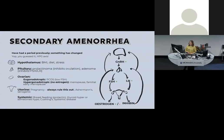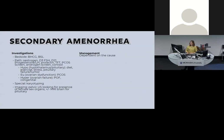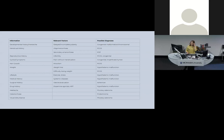Secondary amenorrhea also follows the HPG axis. Hypothalamus: BMI, stress, diet. Pituitary: prolactinoma and adenoma. Ovarian: check hormones to determine if eugonadotropic or hypergonadotropic. For uterine causes in secondary amenorrhea, rule out pregnancy, Asherman's syndrome, and iatrogenic causes — some contraception can cause a delay in periods returning. Systemically: breastfeeding, thyroid (usually hyper but occasionally hypo), Cushing's, and other systemic diseases. Management is dependent on the underlying cause.